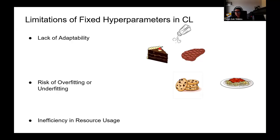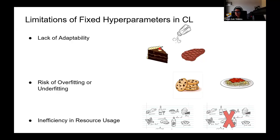And finally, possible inefficiency in resource usage. Consider using the same quantity of ingredients for all dishes regardless of the recipe. This approach would likely lead to wasted ingredients and unsatisfactory meals. Fixed hyperparameters similarly ignore the specific needs of each task resulting in inefficient usage of computational resources or, for example, memory sizes.